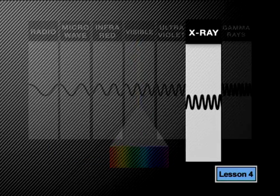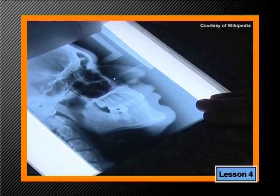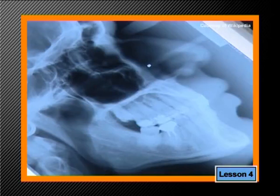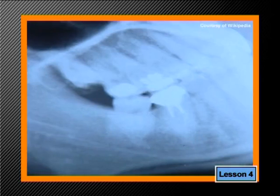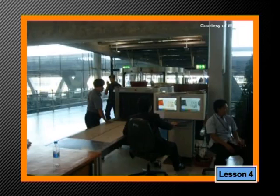Next, we have X-rays. X-rays have wavelengths between 10 to the minus 8 meters and 10 to the minus 11 meters, with frequencies ranging between 10 to the 17 Hz and 10 to the 21 Hz. Because X-rays have a very short wavelength, they are able to penetrate many things. They can be detected on photographic paper and are used to take pictures of the bones of the human body, and also have security applications such as scanners at airports.